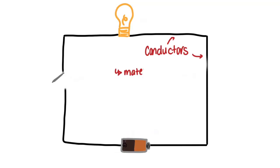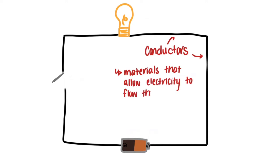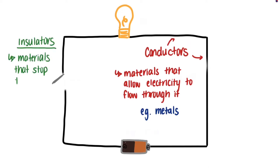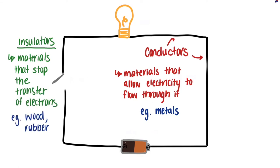Another concept we should go over is the difference between conductors and insulators. In our circuits, the wires act as conductors and are able to transfer the electric charge. Conductors are basically any material that will allow electricity to flow through it — for example, metals such as gold, aluminum, or silver. Insulators, on the other hand, are used to stop the flow of electricity. They are made of materials that prevent the transfer of electrons and protect us from electrical shocks — for example, wood or rubber.